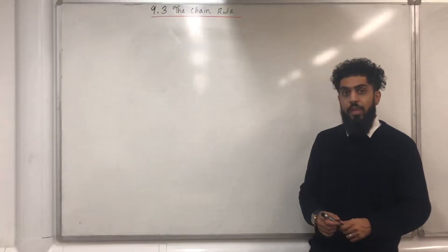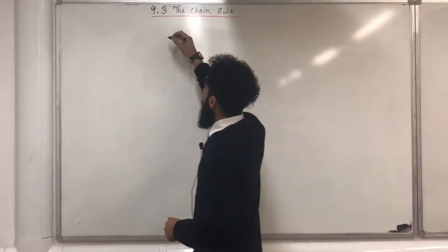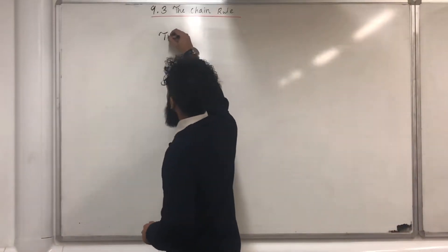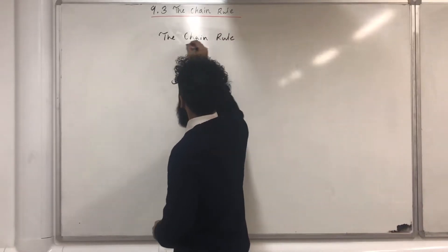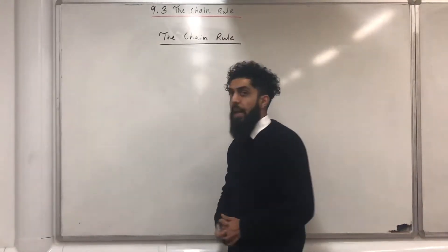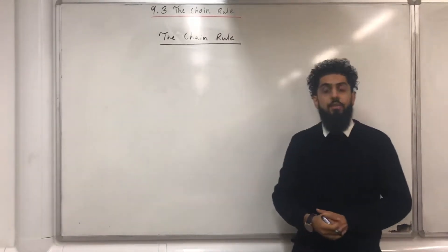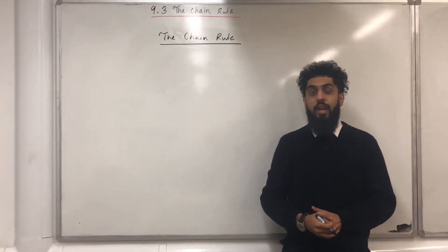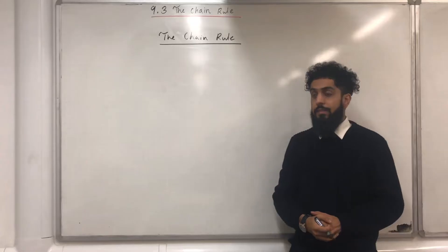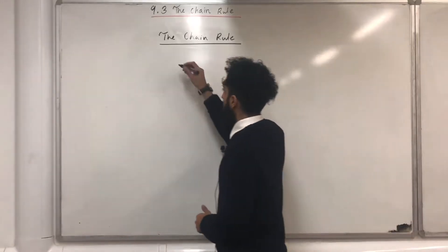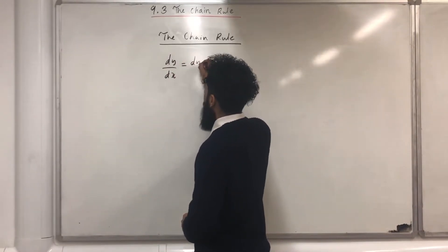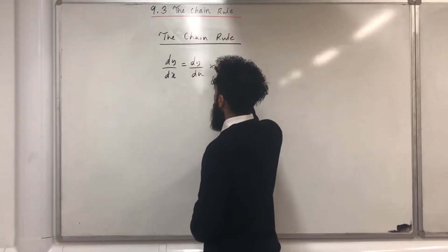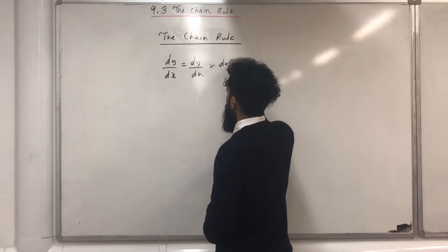Let's start off with what the chain rule is. The chain rule says to find dy over dx, you have to take dy over du and multiply by du over dx. So dy over dx is given by dy over du multiplied by du over dx.